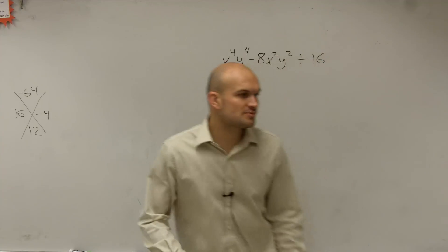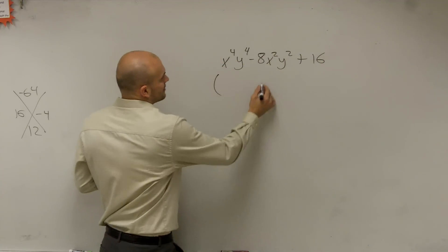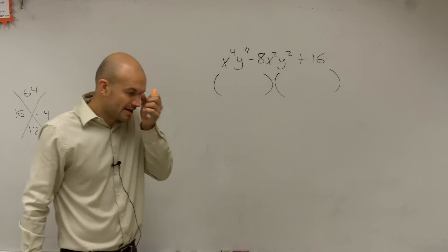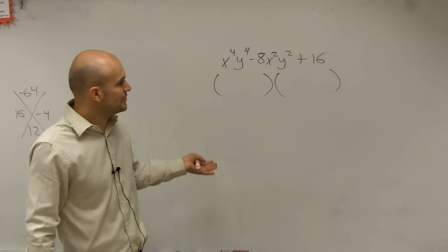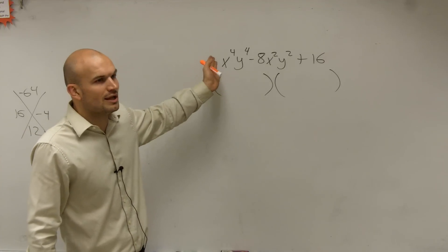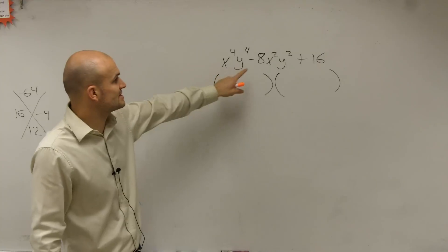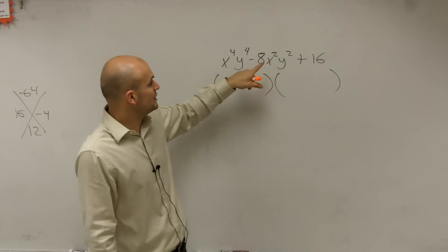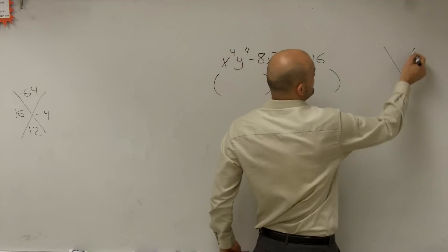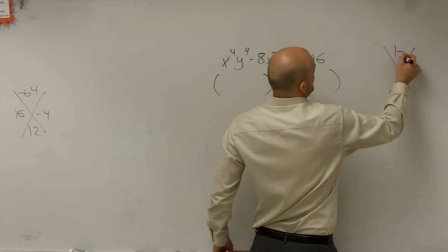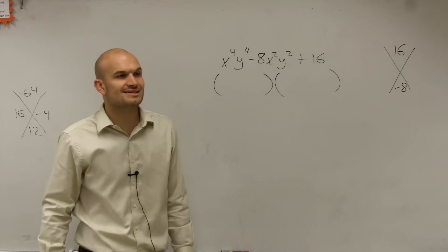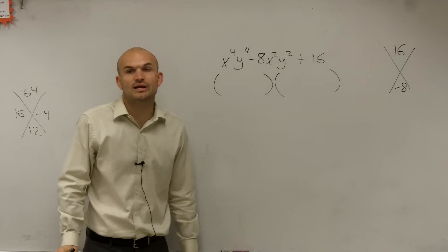So what we're going to do is we know that we're going to write this into factors. And pretty much what we want to do is we could do our whole a times c. If you notice, the coefficient of this is 16, and the coefficient of our middle term is negative 8. So we could use this form again — 16 and negative 8. So what two numbers multiply to give you 16 and add to give you negative 8?